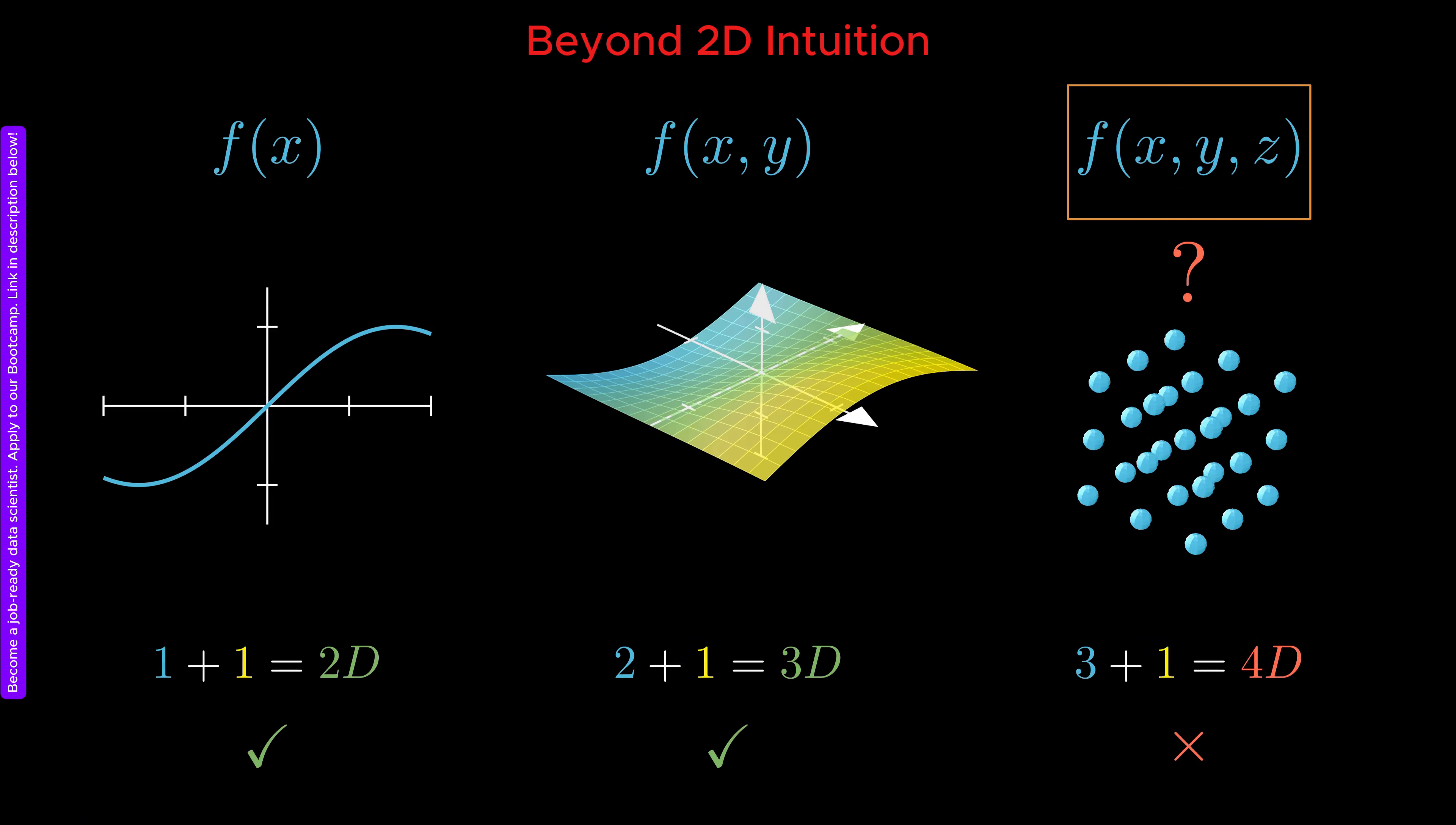If a function depends on three variables, we would need a fourth spatial dimension to represent its value. We simply do not have that. This is where the traditional interpretation fails.